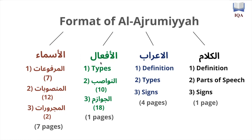Likewise, a verb can never be majroorun — it can only be majzooman, mansoobun, or marfu'. So here we're going to start talking about al-asma: some of them are marfu', which are seven; some of them are mansoob, which are twelve; and some of them are majroorun, which are two.